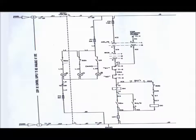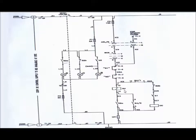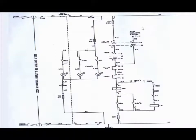Now if we give another pulse from the closing control switch, it will not go to the closing coil further. Instead, it will go to the 94 anti-pumping relay via the auxiliary contact of the circuit breaker. As soon as this coil energizes, its NC contact opens and it remains energized as long as the control switch is in close position. This anti-pumping relay prevents another pulse from reaching the closing coil of the circuit breaker. This is the complete local closing operation of the circuit breaker.